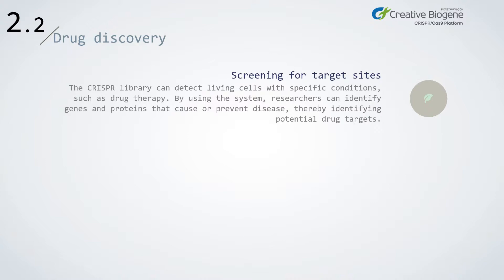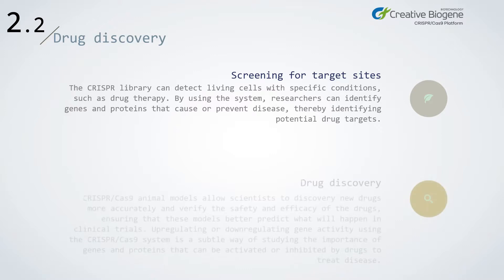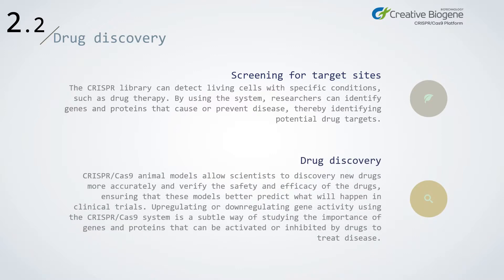The CRISPR library can detect living cells with specific conditions, such as in drug therapy. Using this system, researchers can identify genes and proteins that cause or prevent disease, thereby identifying potential drug targets. CRISPR-Cas9 animal models allow scientists to discover new drugs more accurately and verify the safety and efficacy of drugs, ensuring that these models better predict what will happen in clinical trials. Up-regulating or down-regulating gene activity using the CRISPR-Cas9 system is a subtle way of studying the importance of genes and proteins that can be activated or inhibited by drugs to treat disease.